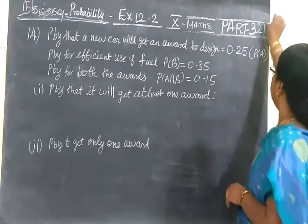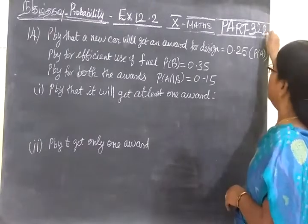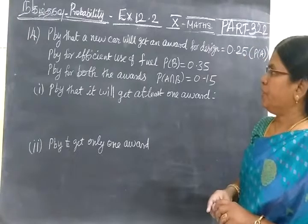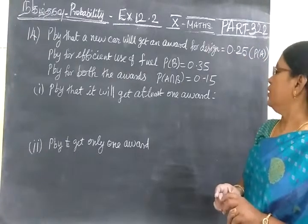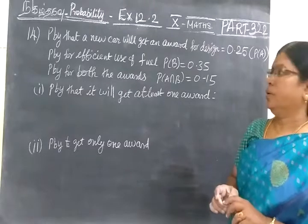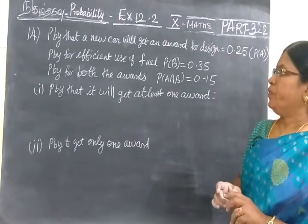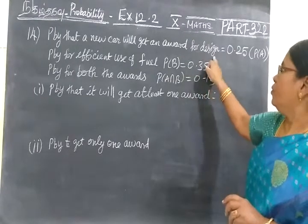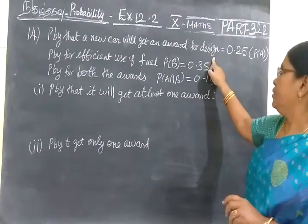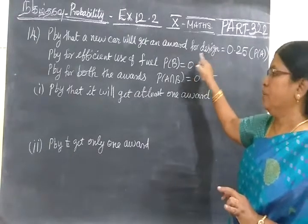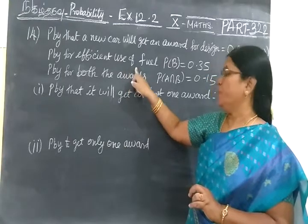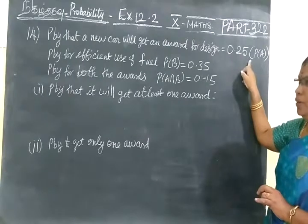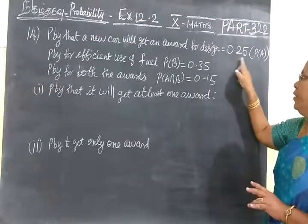Now next we will see for Exercise 10.2, Question 14. It is given probability that a new car will get an award for design. In a car company, they are manufacturing a new car and giving the award for new design. Usually it is done in all car companies when they produce a new car. For design, the probability is 0.25.